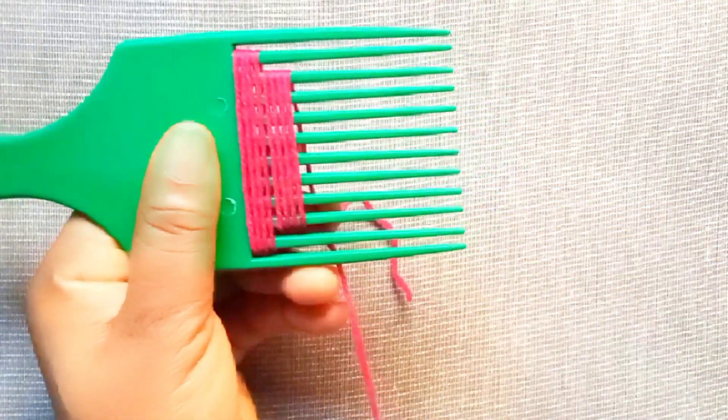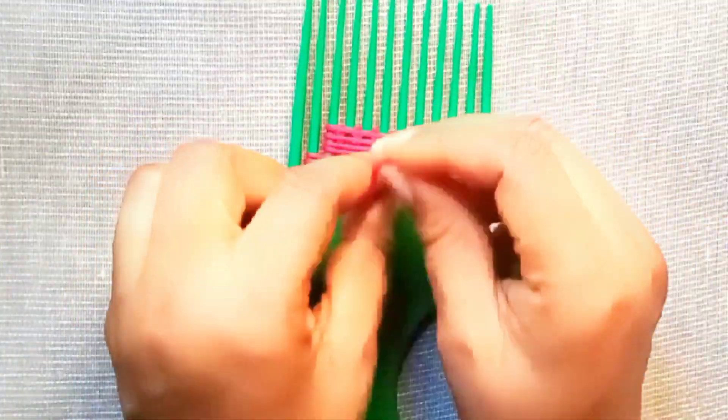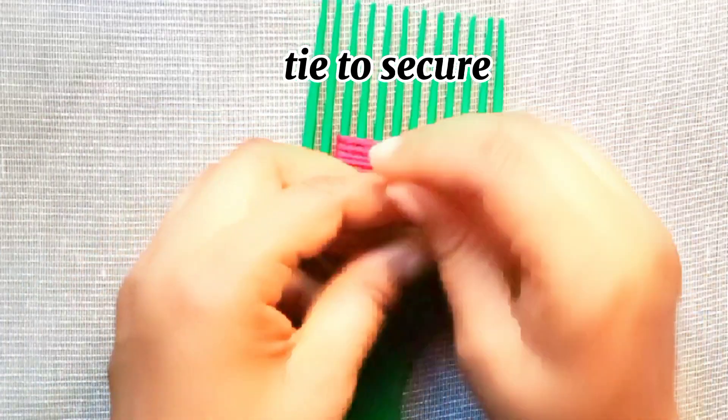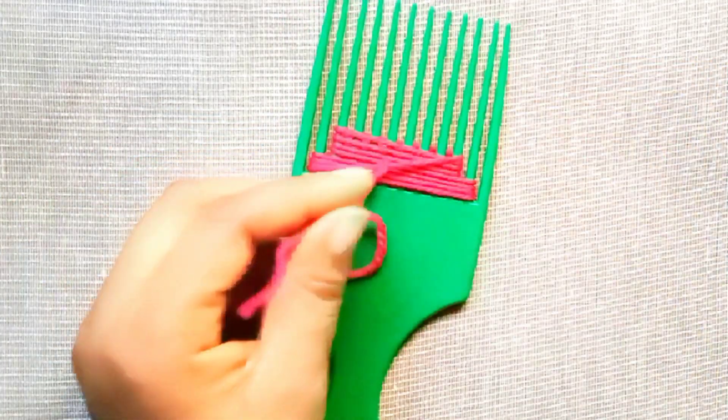Then I shifted a little to 8 teeth of the comb and wrapped around wool there 4 times or so. After that, tie it to secure.